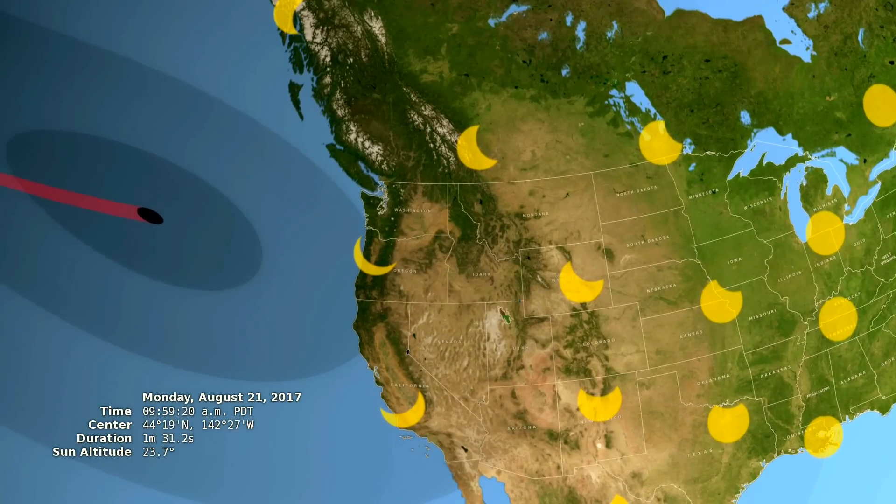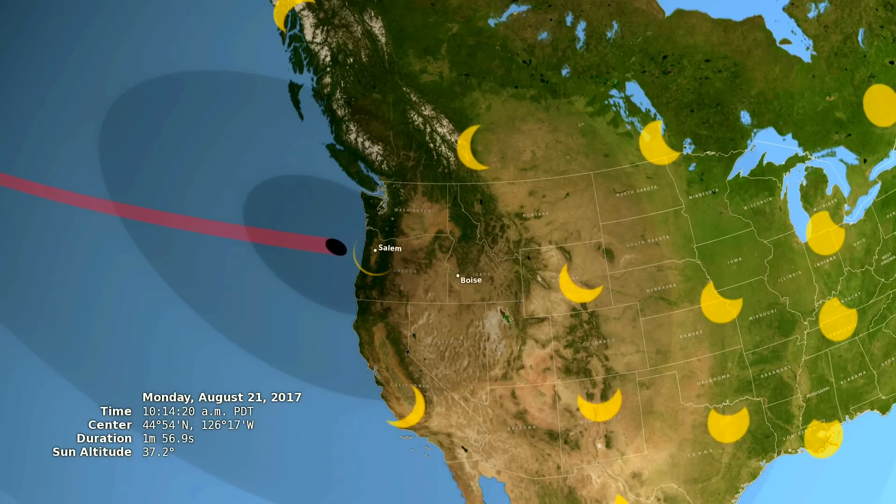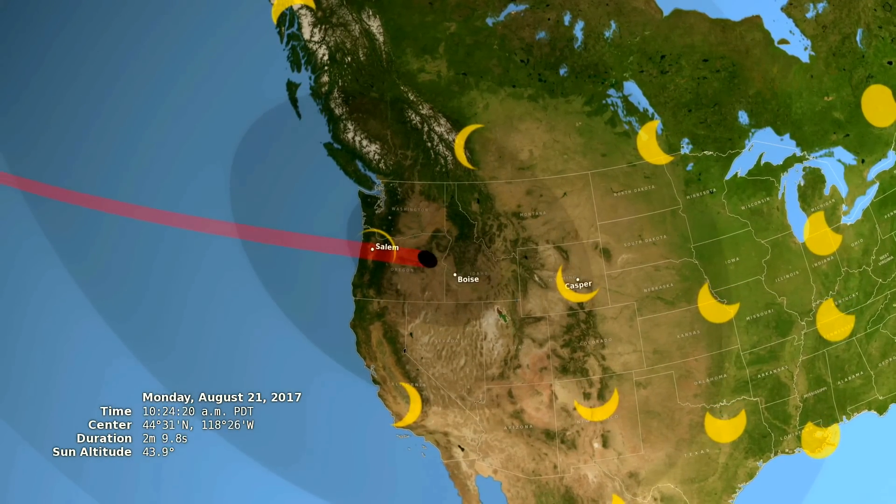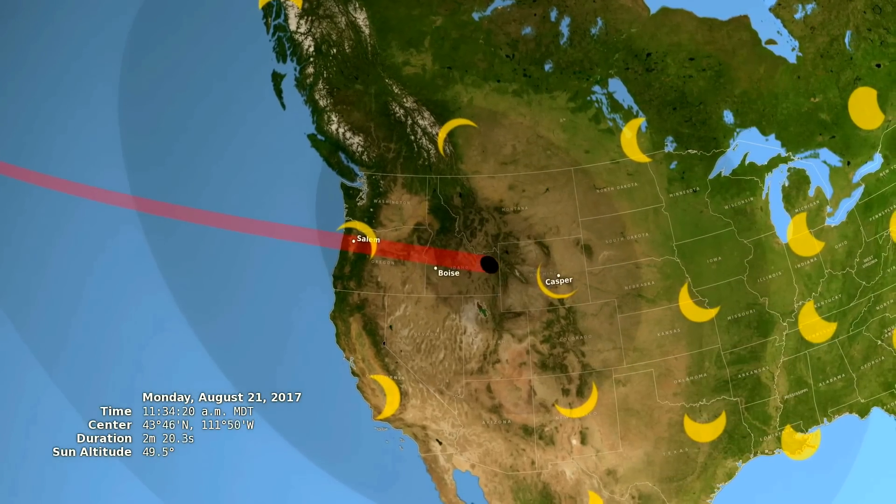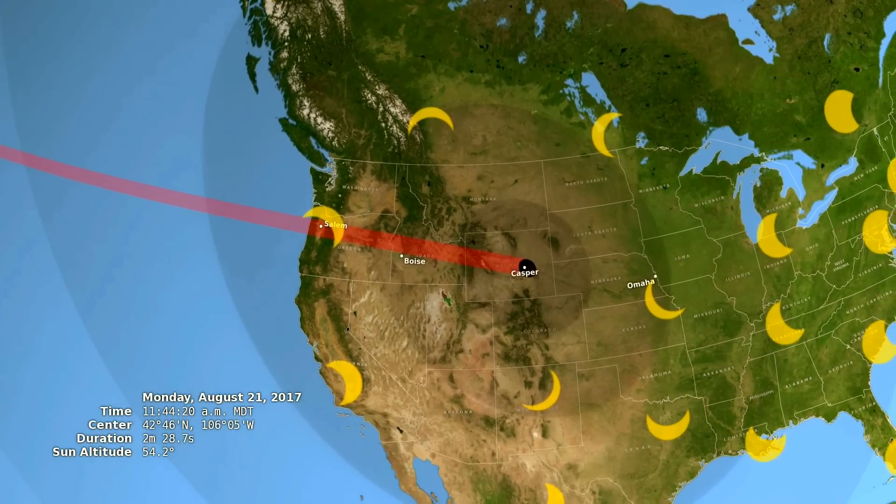Everyone there will see the Moon at least partially block the Sun. People within the path of totality, shown here in red, will witness a total solar eclipse.